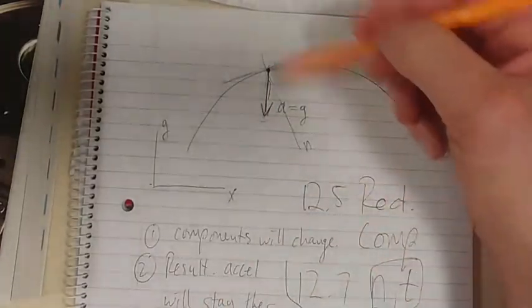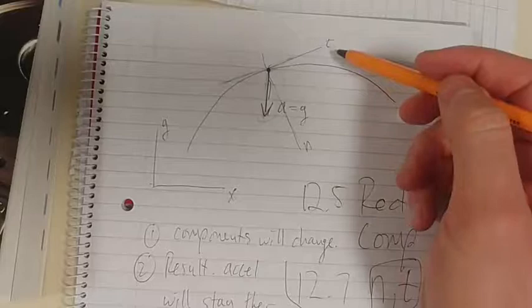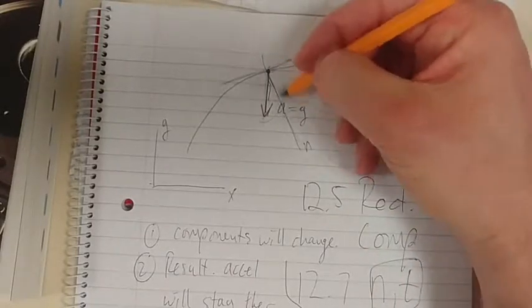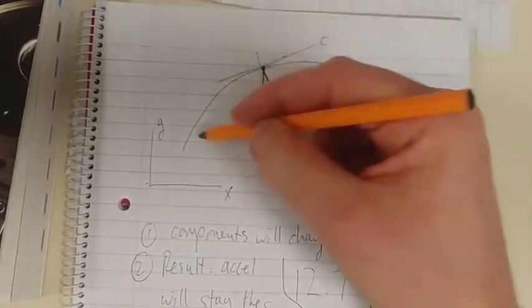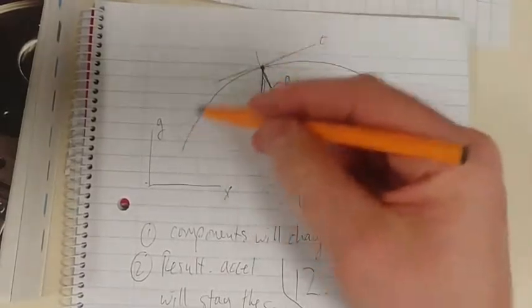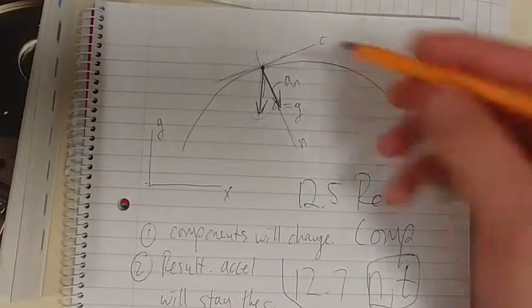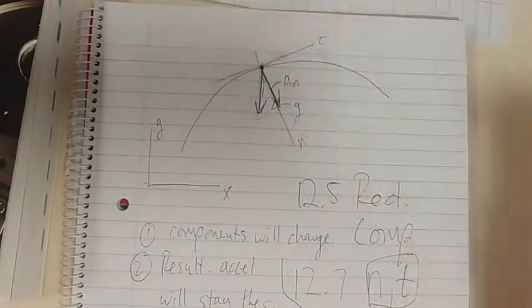But now if we change our coordinate system to n and t, we're going to get an acceleration like that. Simply that a_n, if you recall, it's because we're going around a bend. So we have a_n, which is directed towards the normal.